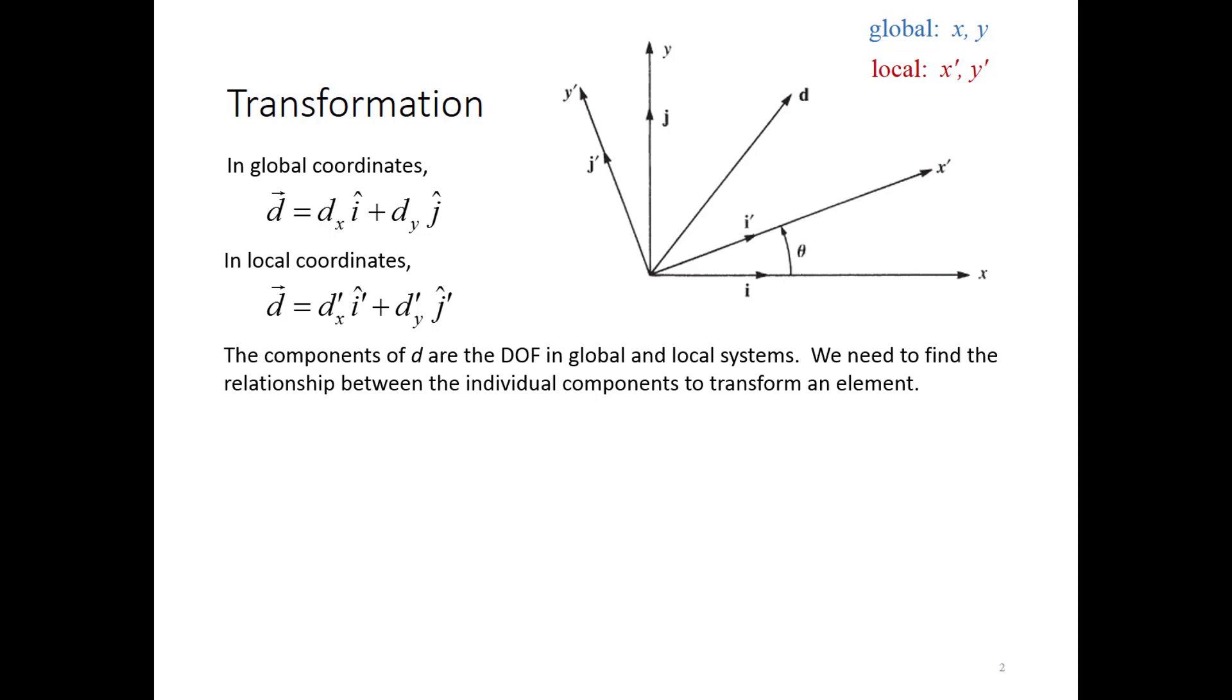So what we want to do is relate these two different ways of describing D. First off, we need to relate the unit vectors. We're going to take i-hat prime and break it into two pieces. One aligned with the x-axis in the global system and one with the y-hat axis. So i-hat prime is equal to i-hat cosine theta plus j-hat sine theta. Similarly, j-hat prime is equal to minus i-hat sine theta plus j-hat cosine theta.